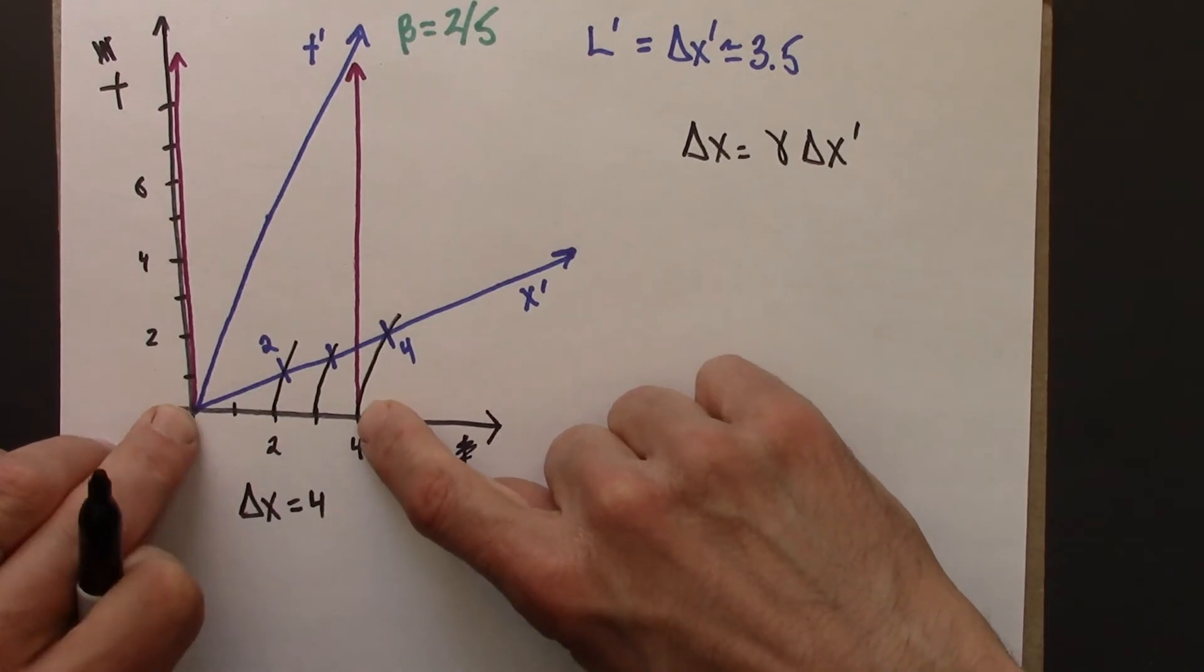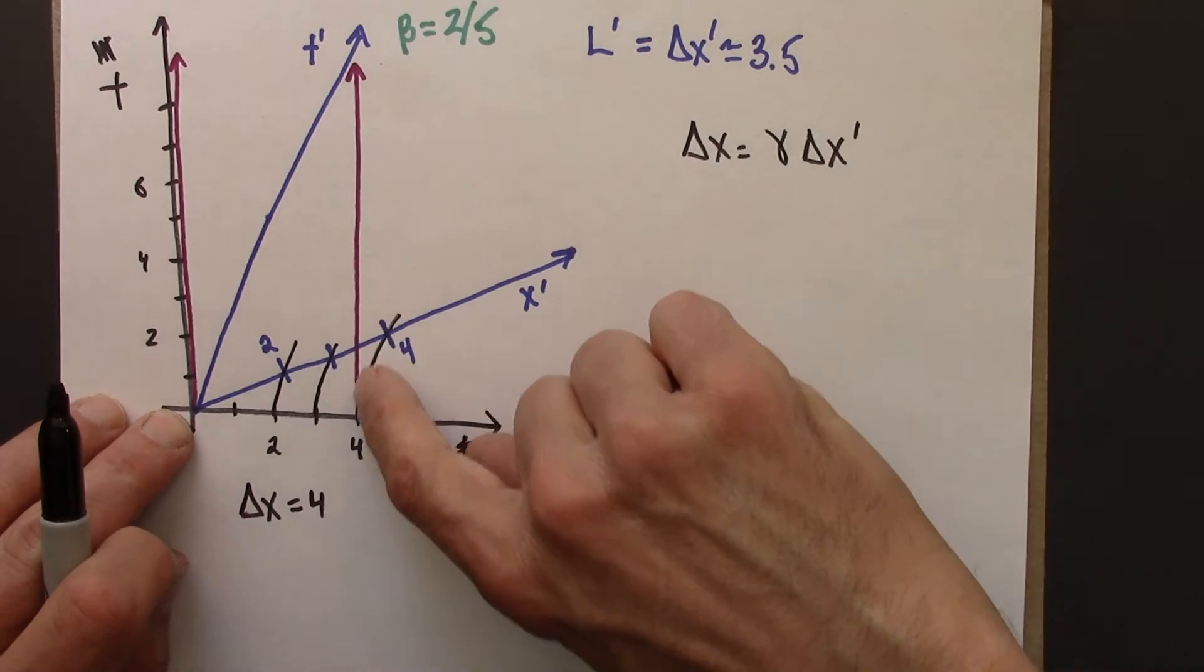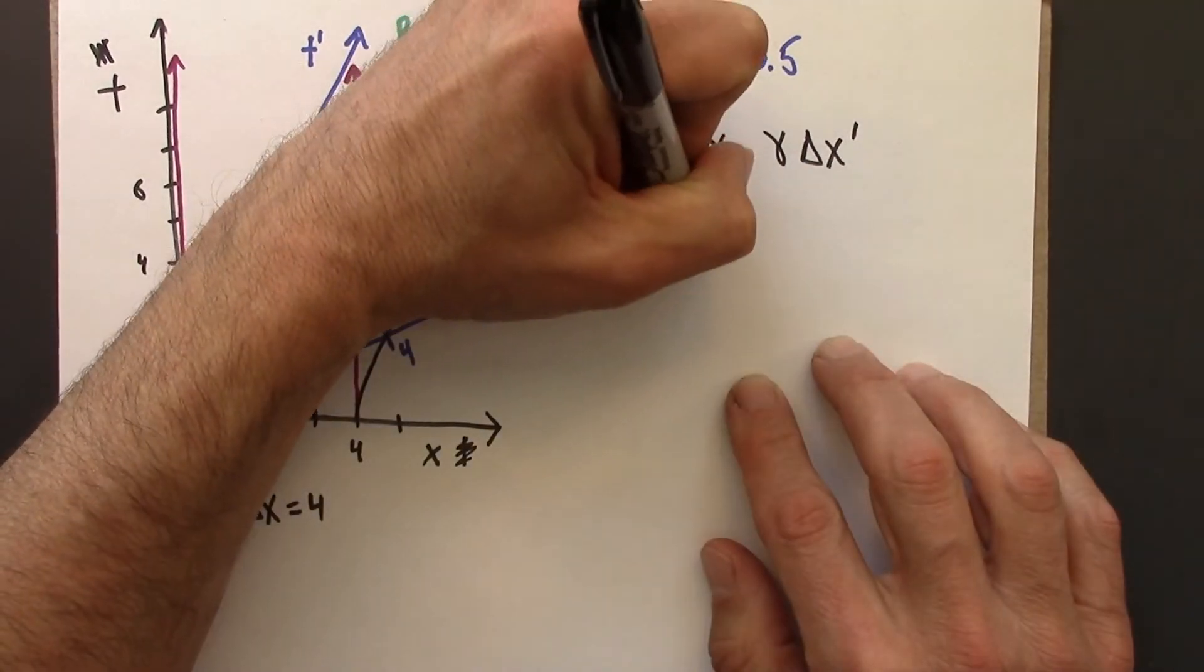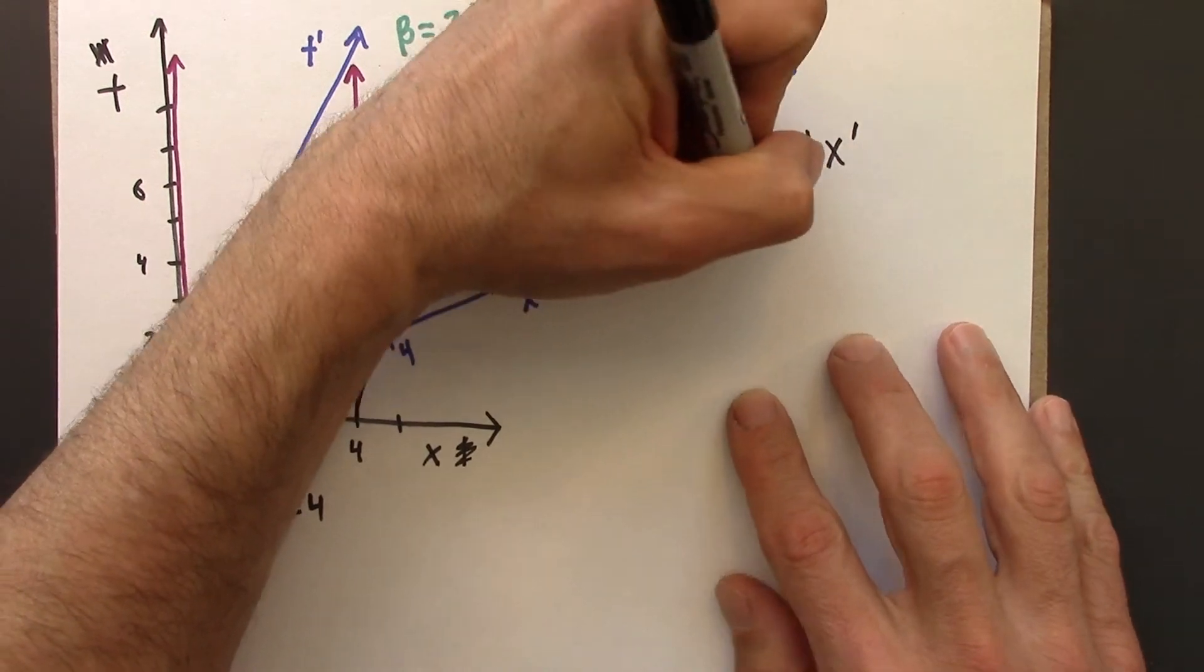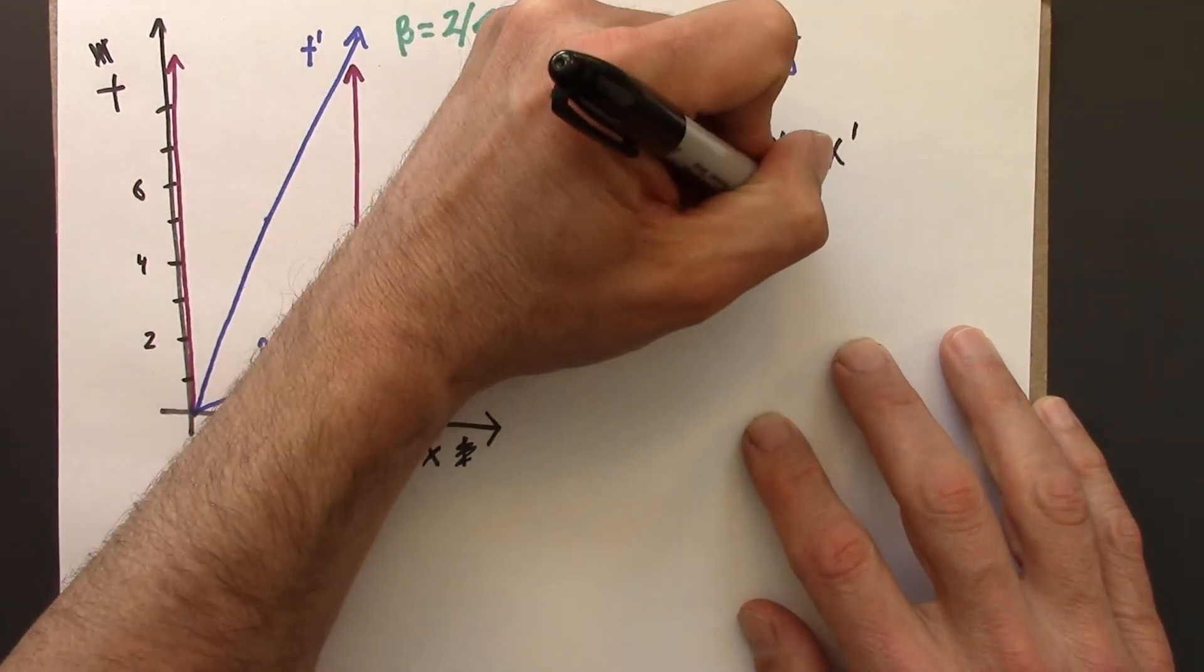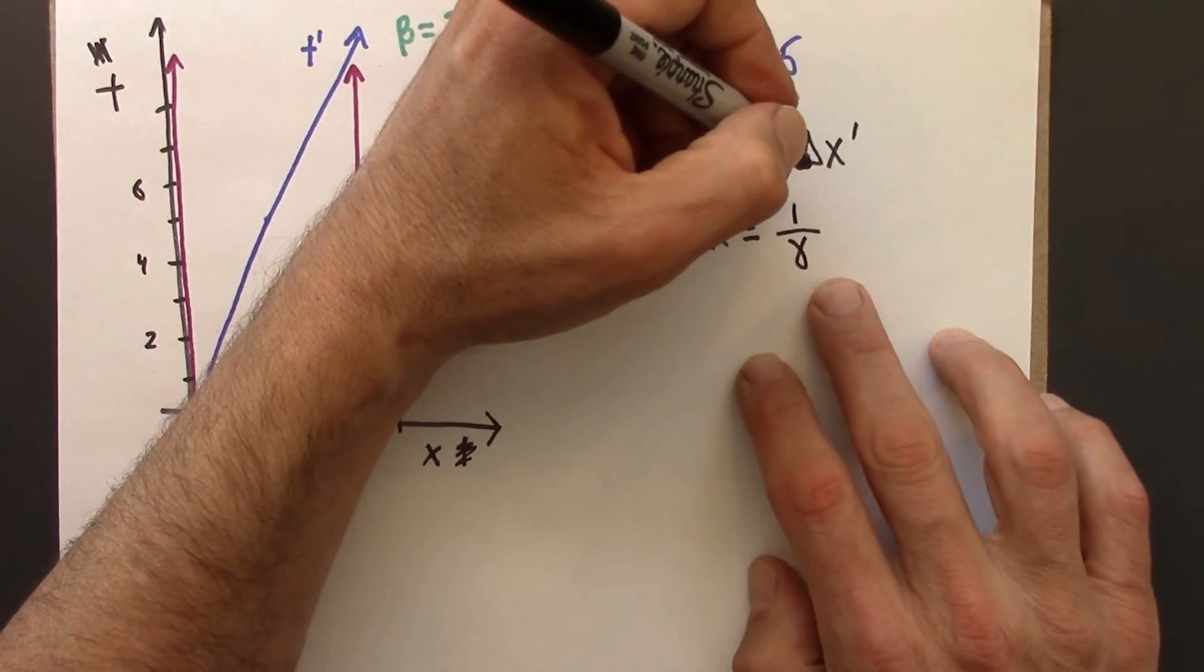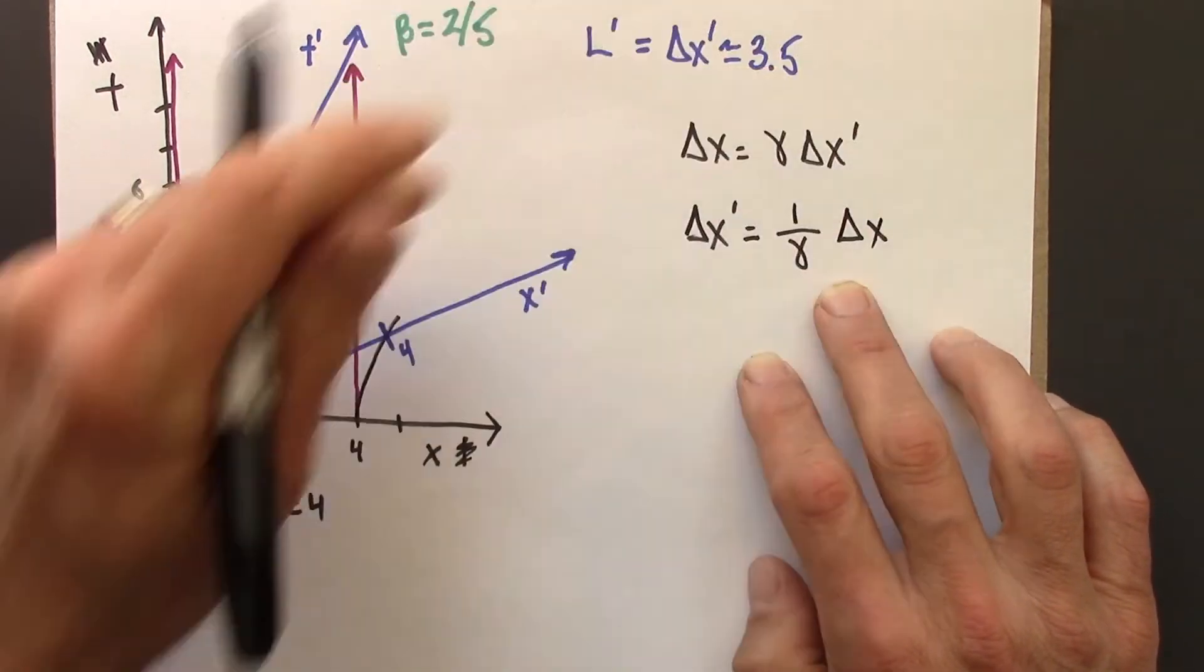In the at rest frame, the distance from here to here is 4. So I'd want to know what is the corresponding distance up here. That would be x-prime. So in this case, I'm looking for x-prime. So delta x-prime, while I divide both sides by gamma,